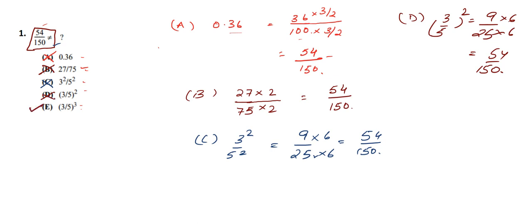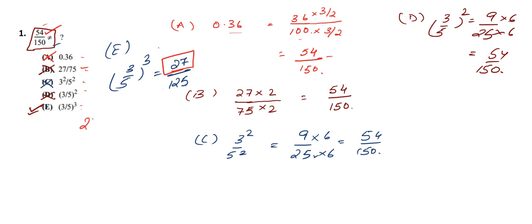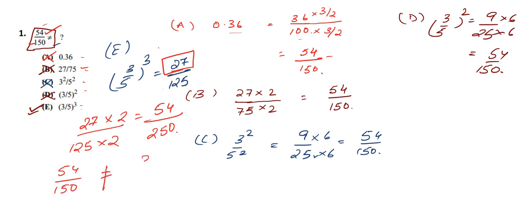We are left with only option E, so it may be the correct answer. Let us check. Here we have (3 by 5) whole cubed. 3 cubed gives us 27 and 5 cubed gives us 125. To change the numerator to 54 we multiply by 2, so we also multiply the denominator by 2. That gives us 54 in the numerator but 250 — not 150 — in the denominator. So 54 by 150 is not equal to (3 by 5) cubed. Hence our answer is option E.